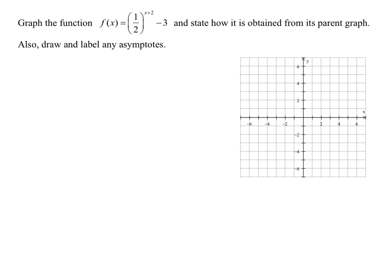In this problem, I need to graph this function here: f of x equals 1 half raised to the x plus 2 minus 3. We need to state how it's obtained from its parent graph, and we also must draw and label any asymptotes.